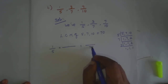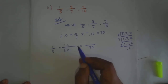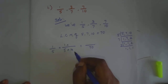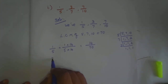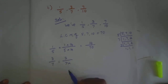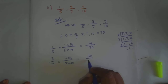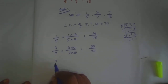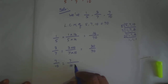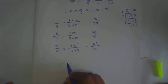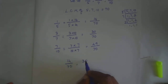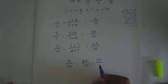1 by 5: we need 70 as denominator. 5 table: how many times? 14. So 1 into 14 is 14 by 70. 3 by 7: 7 table into 70 — how many times? 10 times. So 3 times 10 is 30 by 70. 7 by 10: 10 table into 70 — how many times? 7 times. So 7 times 7 is 49 by 70. So we have 14 by 70, 30 by 70, 49 by 70.